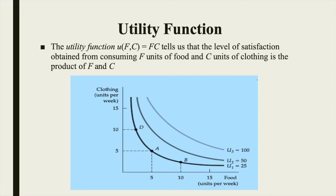Have a look at this figure where these indifference curves show the utility associated with this function. First, let's choose a particular market basket A which contains 5 units of clothing and 5 units of food. This market basket generates a utility U1 of 25 because U(f,c) = f×c = 5×5. If we take point B, it should generate a utility of 25 as it lies on the same indifference curve.